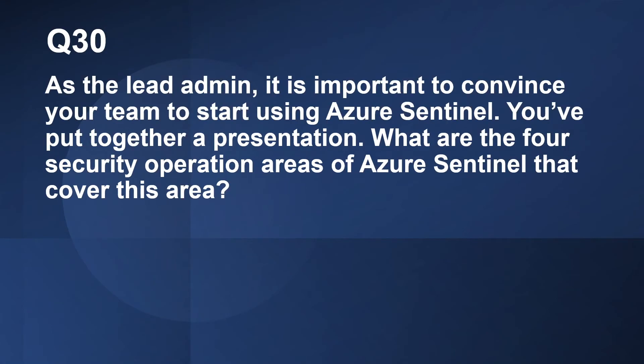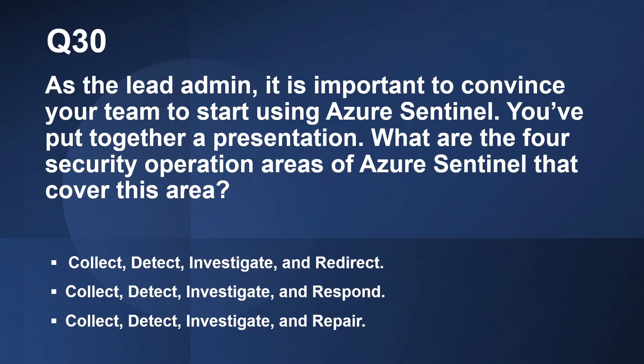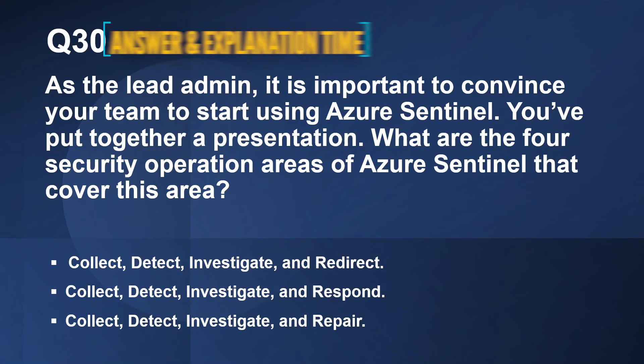Let us look at the last question on this episode. Question number 30. As the lead admin, it is important to convince your team to start using Azure Sentinel. You have put together a presentation. What are the four security operation areas of Azure Sentinel? The options are: Collect, Detect, Investigate, and Redirect; Collect, Detect, Investigate, and Respond; or Collect, Detect, Investigate, and Repair.